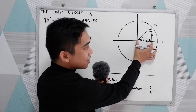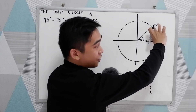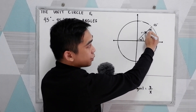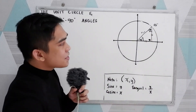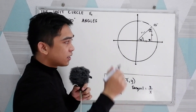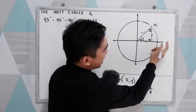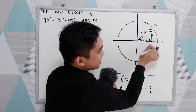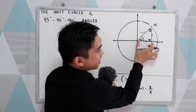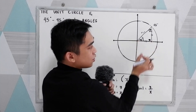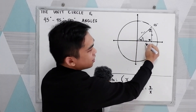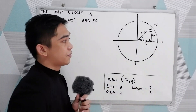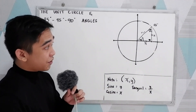The measure of this leg is equal to the measure of the other leg, and we have the radius r equal to 1. Let us find the coordinate or the length of this part of our triangle. Let's say this is x, and since they are equal, the other leg is also x. We are going to use the Pythagorean theorem.